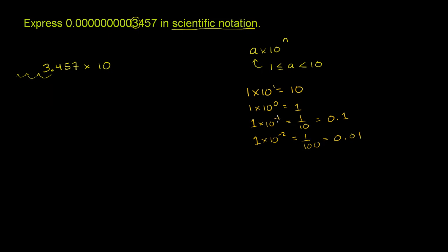What's happening here? When I raise it to a negative power, I raise it to a negative 1 power, I've essentially moved the decimal from to the right of the 1 to the left of the 1. When I raise it to the negative 2, I moved it 2 over to the left.